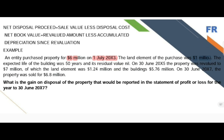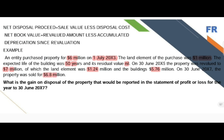The land element was $1 million, meaning the building element is $5 million, with a total useful life of 50 years and nil residual value. On 30th June 2005, after 2 years, the property was revalued to $7 million, of which the land element was $1.24 million and the building element is $5.76 million. On 30th June 2007, exactly 2 years later, the property was sold for $6.8 million, and we need to determine whether there is a gain or loss.